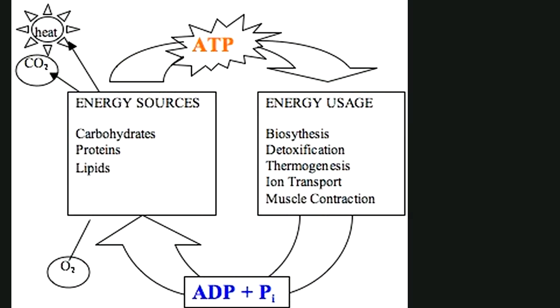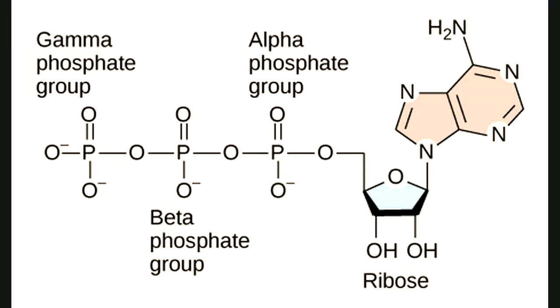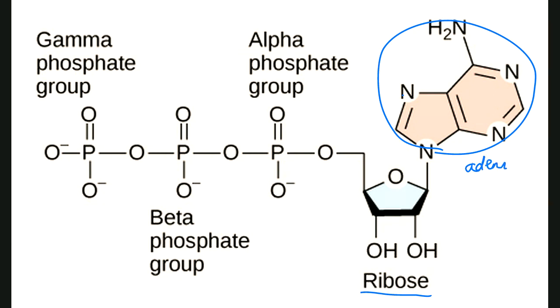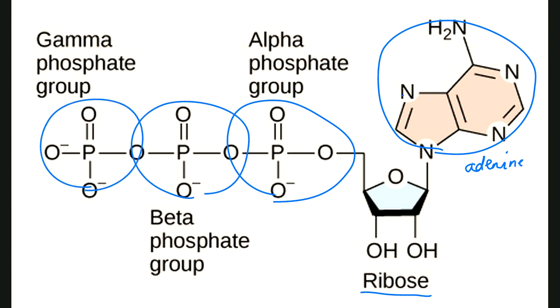Let's look at the actual ATP molecule. There's the ribose sugar, the nitrogenous base — adenine — where you can see all the nitrogens, and then one, two, three phosphate groups. It's this last phosphate group — this is the high-energy bond — where you cleave off the gamma phosphate. Once cleaved, you're left with just two phosphates, which is ADP.